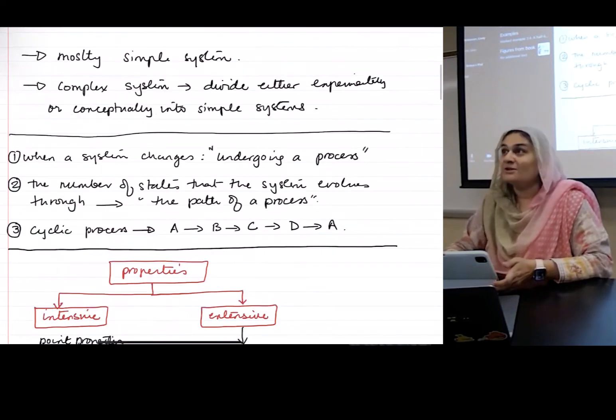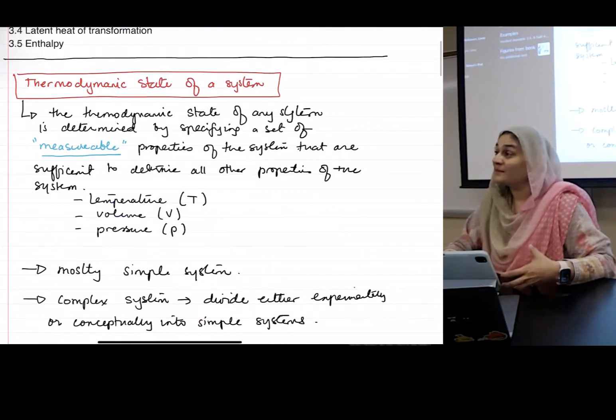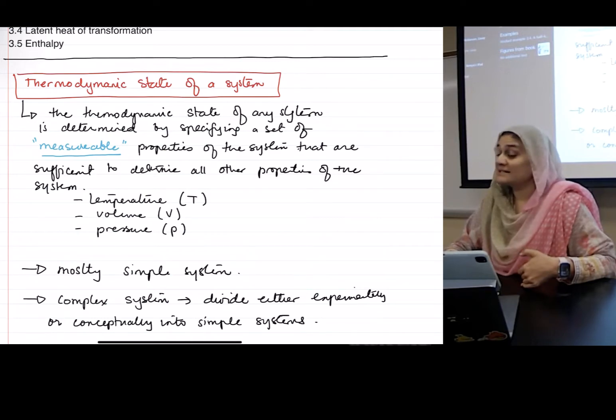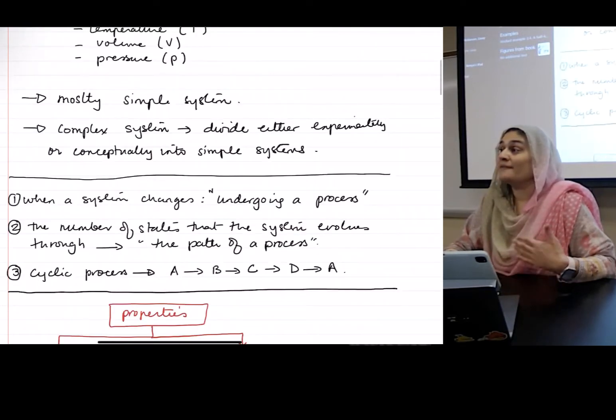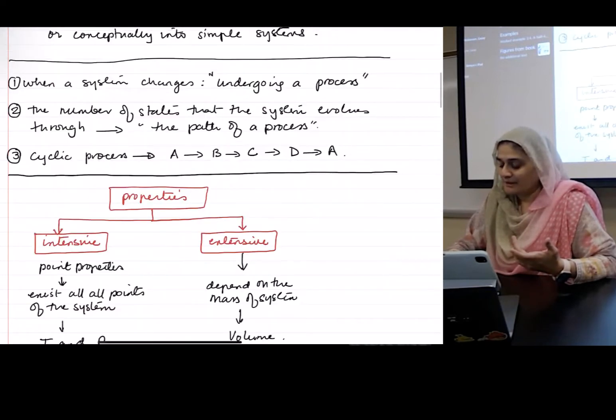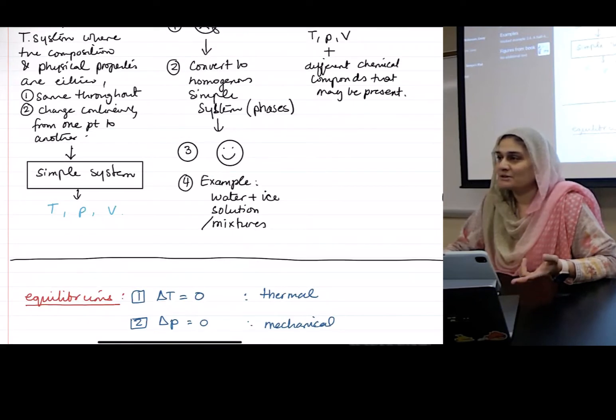So, remember on Tuesday, we talked about what is a thermodynamical system, and we talked about state variables. What are state variables? Things that can explain what the system is doing right now. And what did we say that they were? Temperature, pressure, volume, right?